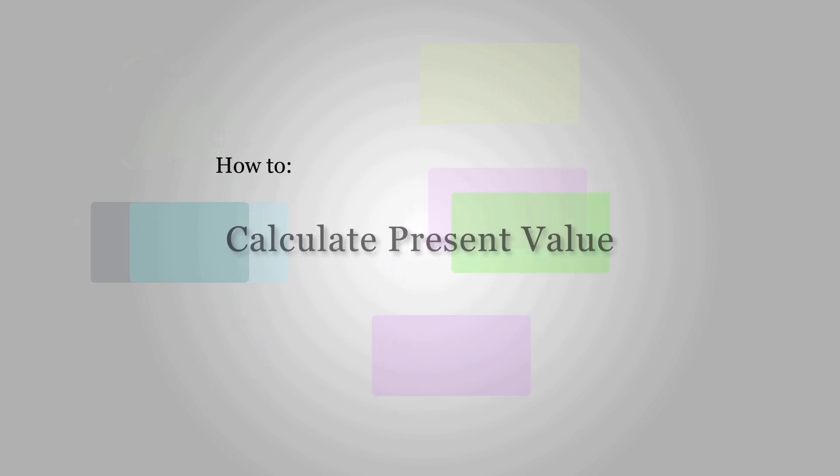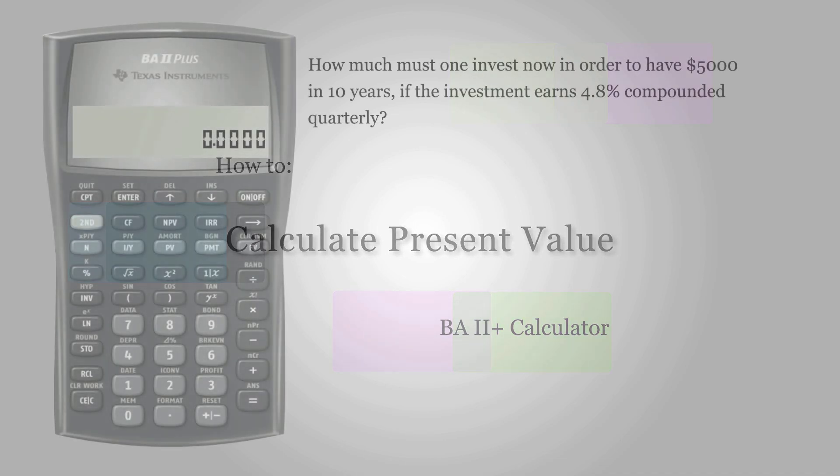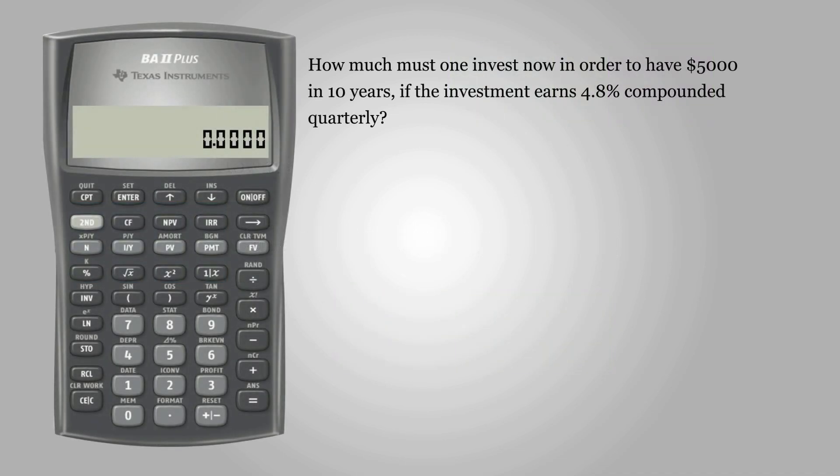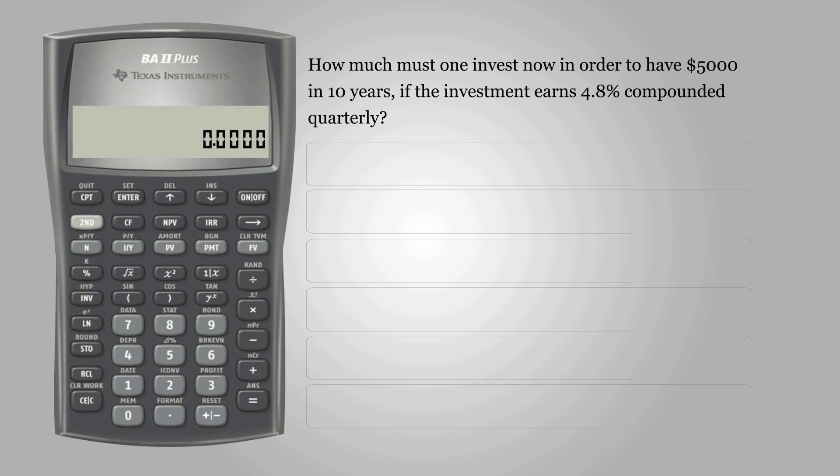In this video, we learn how to calculate present value using BA2+. The question asks, how much must one invest now in order to have $5,000 in 10 years if the investment earns 4.8% compounded quarterly?